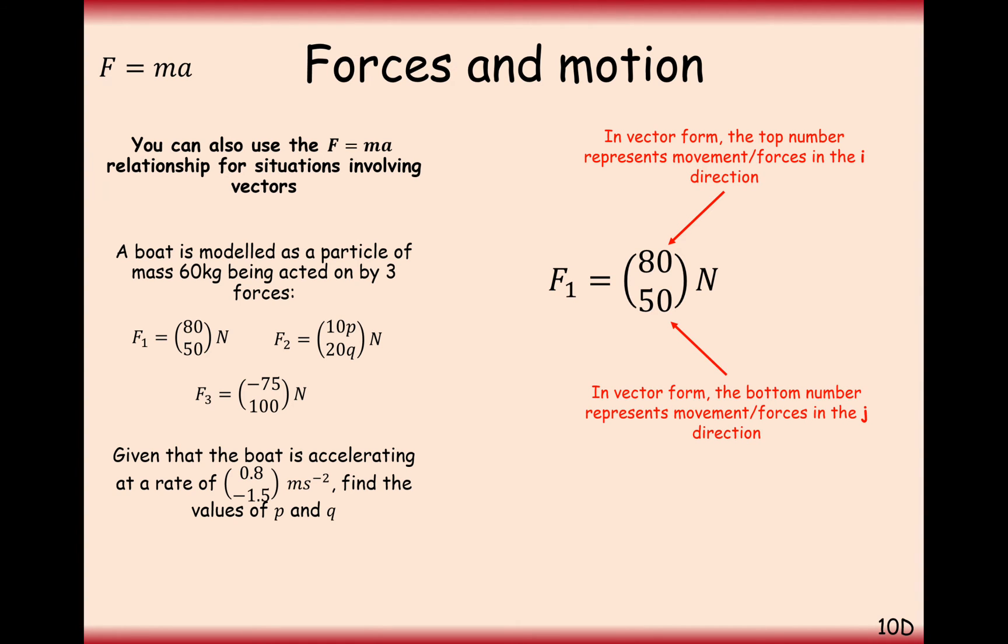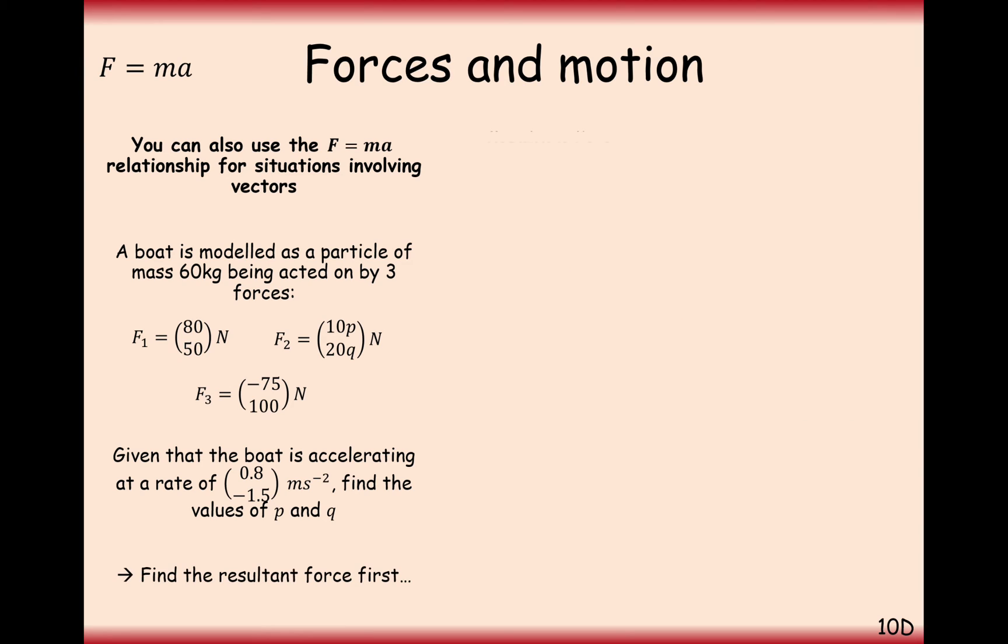So think of the top value as i, think of the bottom value as j. So what we want to do first is find the resultant between our three forces. If all three forces are acting on it, then we want to know the total force that's acting on it. So 10p plus 5, and 20q plus 150 newtons. So this force then equals mass of 60 times by our acceleration.